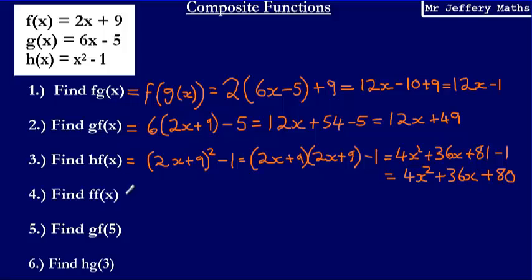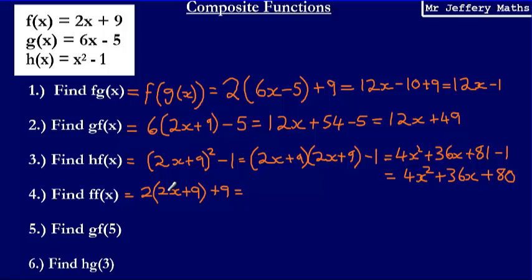On to question 4: we're asked to find f of f of x. We're simply substituting f(x) into f(x). So this means we get 2 multiplied by (2x plus 9), plus 9. Expanding and simplifying: 2 times 2x gives 4x, 2 times 9 gives 18, then add on that extra 9. That leaves us with 4x plus 27.